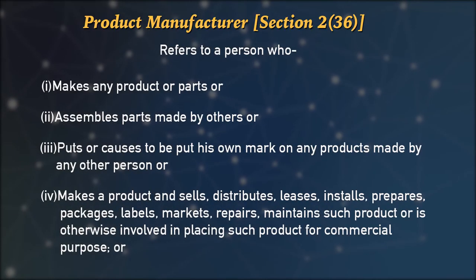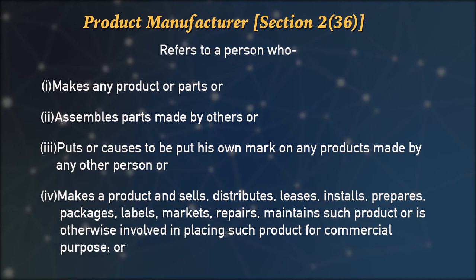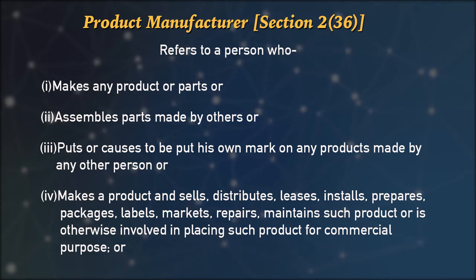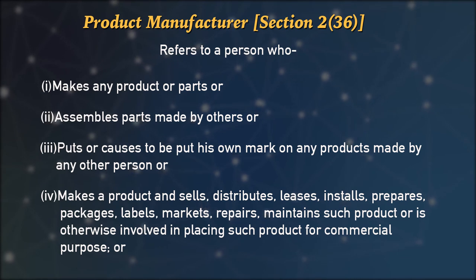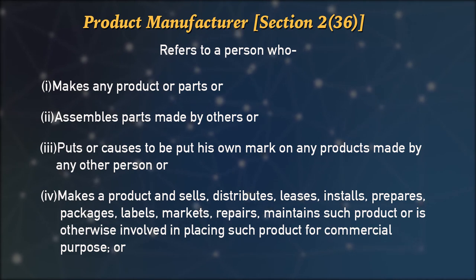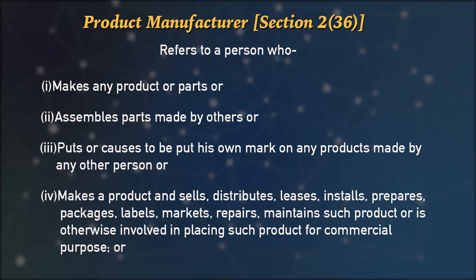Then the product manufacturer. Product manufacturer refers to a person who makes any product or parts thereof, or assembles parts made by others. The term 'product manufacturer' and 'manufacturer' have a little difference — here, 'product' refers to a particular product specifically. That is the general definition.